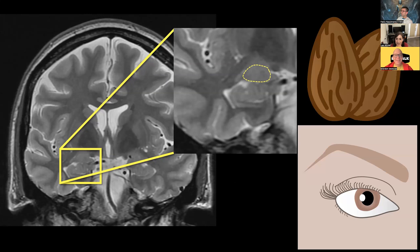Right next to the hippocampal head is the amygdala. Amygdala actually means almond because it's almond-shaped. You can see how you have a little almond sitting above the teeth. This helps me remember where we are because almonds — you think about almond eyes. So almond eyes are by the hippocampal head: eyes by the head, teeth by the head. If you see the almond eye and the teeth, you know you're in the hippocampal head.